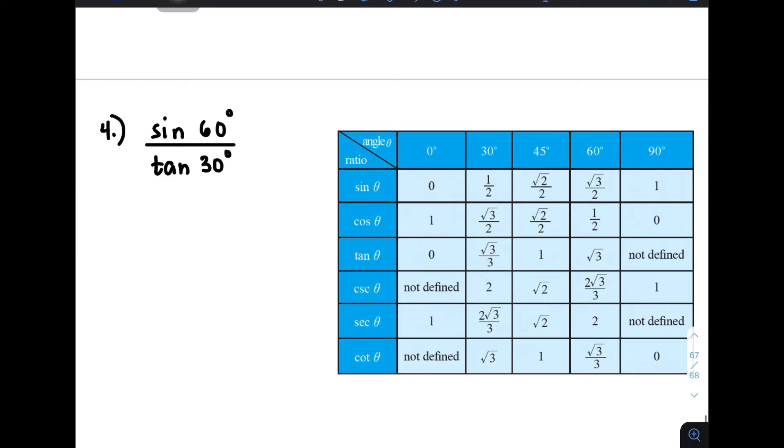Now let's move on with item number 4. For number 4, we are given sine 60 degrees divided by tangent 30 degrees. Now as for this given expression, we need to get the value of sine 60 degrees. We have sine 60 degrees, which is this.